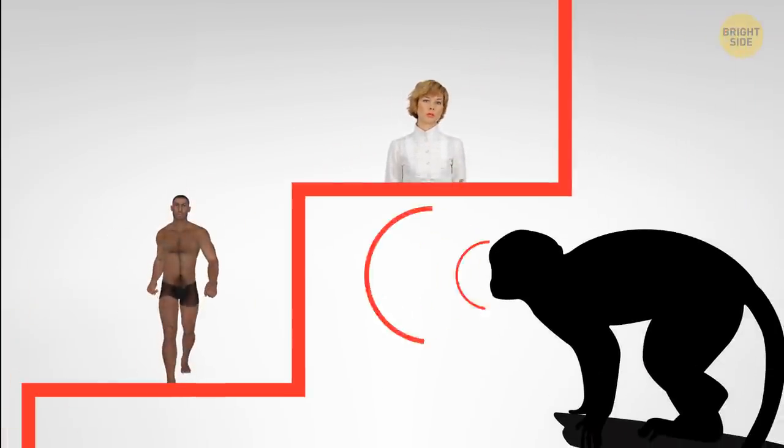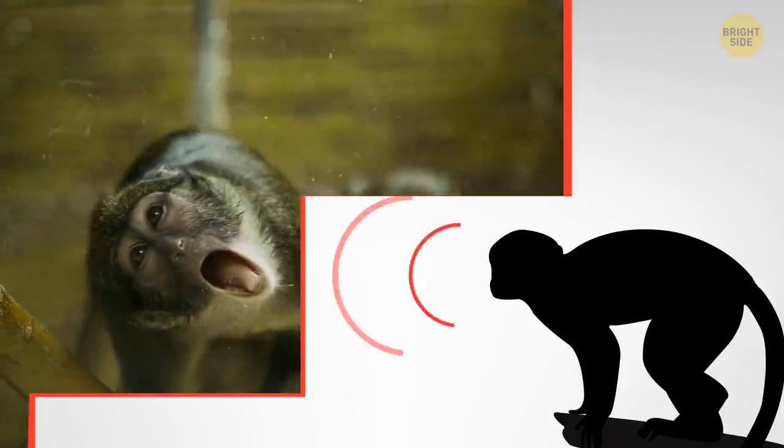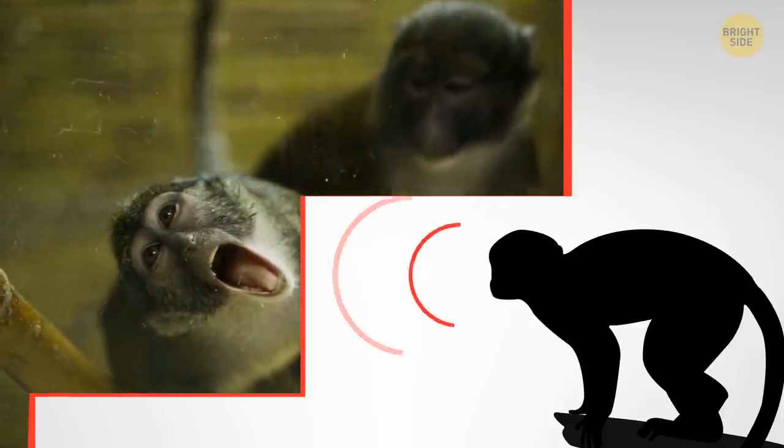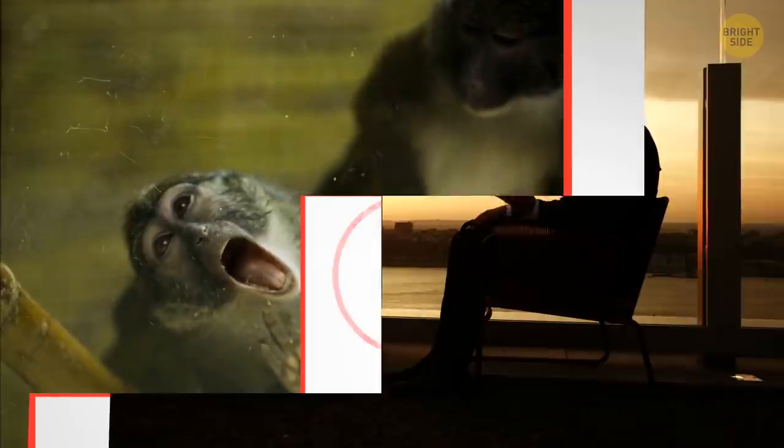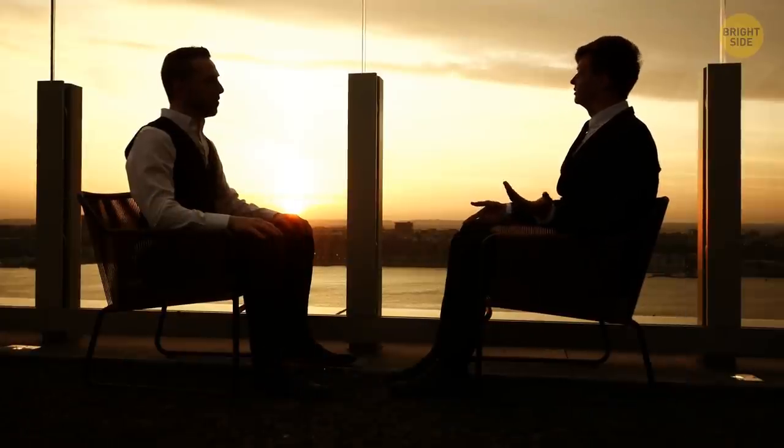The next one helped us learn how to talk. Apes, for example, have air sacs that allow them to make loud noises. But these air sacs make it impossible to say distinctive vowel sounds and modify the speech. Humans have lost them, and they manage to learn to speak.